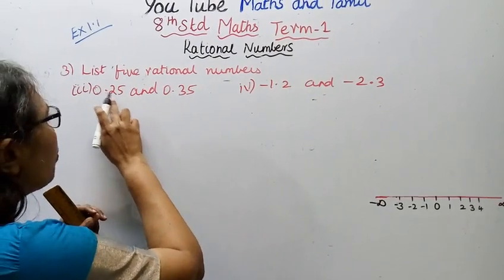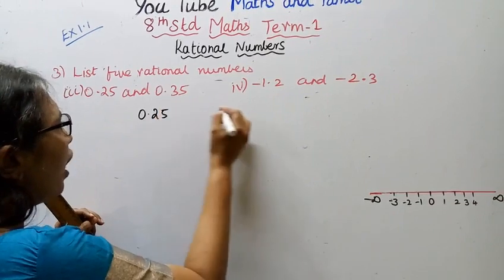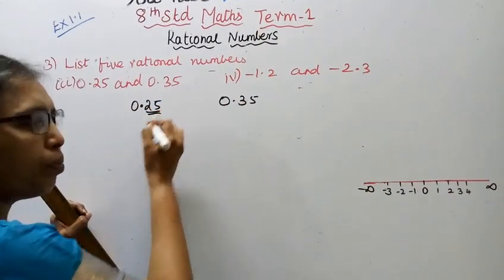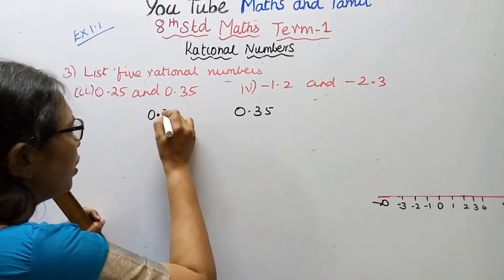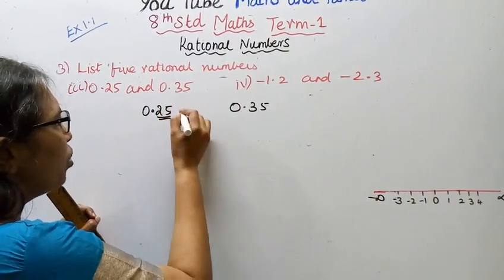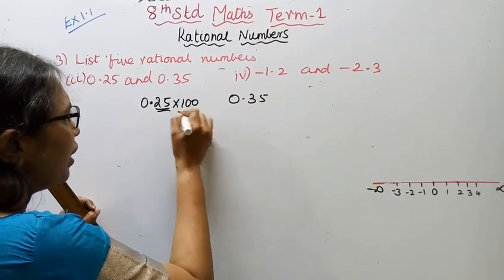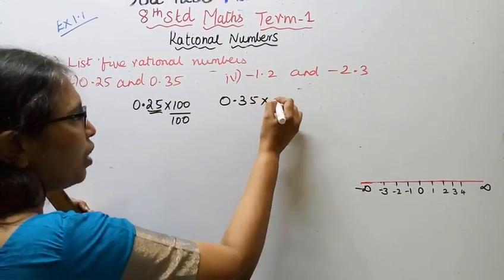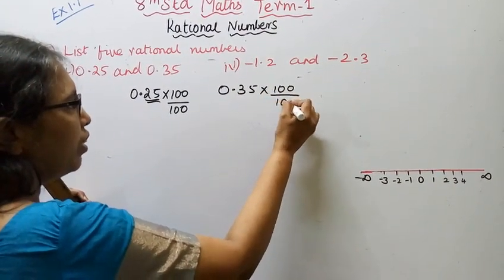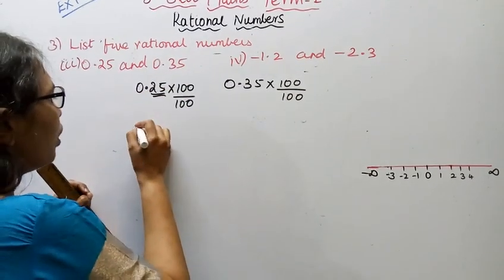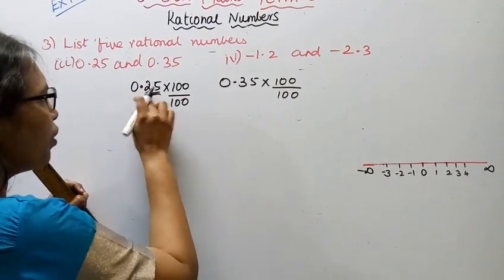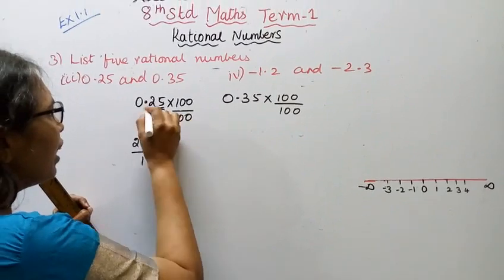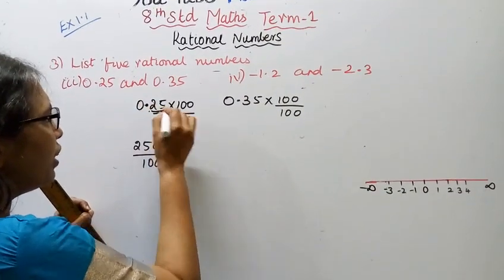We need to find five rational numbers between 0.25 and 0.35. To do this, we multiply both numbers by 100. So 0.25 into 100 gives us 25, and 0.35 into 100 gives us 35. We write these as 2500 by 100 and 3500 by 100, moving the decimal points accordingly.